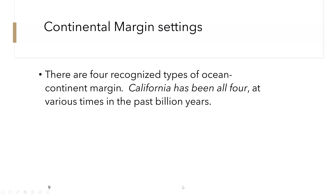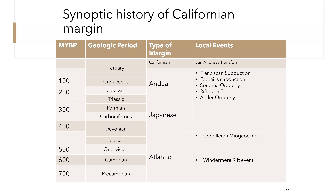Looking at continental margin settings, there are four recognized types of ocean-continental margins, and California has had all four at various times in the past billion years — not all at once, but at various times. Right now we are experiencing the San Andreas transform, or the Californian margin. Previously in the Cretaceous, Jurassic, and part of the Triassic, we experienced the Andean and Japanese margins, which are characteristic of Franciscan subduction — the Farallon plate subducting beneath North America. Before that, we had the foothills subduction, the Sonoma Orogeny, a rifting event, and the Antler Orogeny.